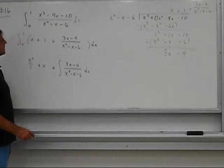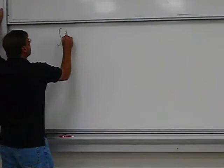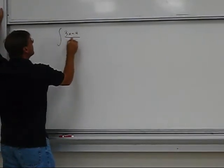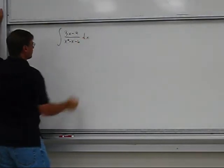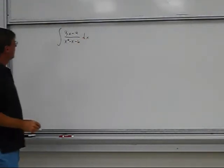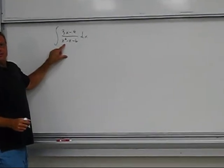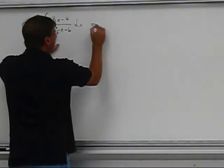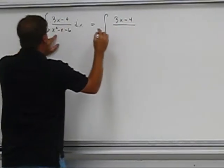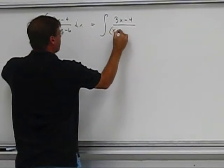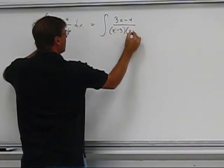So let's focus on that integral now, the integral of 3x minus 4 over x squared minus x minus 6. What I'm going to do is I'm going to factor the denominator here, that's equal to 3x minus 4 over x minus 3 times x plus 2.